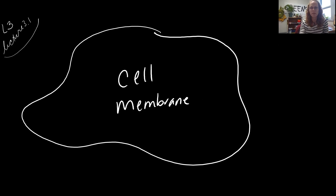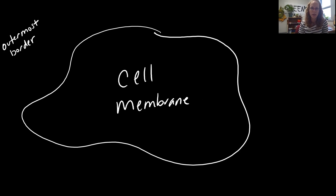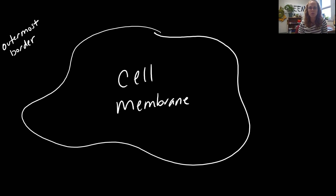Our topic is the cell membrane, which really deserves its own discussion because the cell membrane is that outermost border of the cell. We see this for human cells, which are animal cells, but also for all cell types — this is universal. If you're going to take a microbiology class and study bacteria, fungi, or other protists, the cell membrane information we study here is applicable to all of those cell types as well as plants and other organisms.